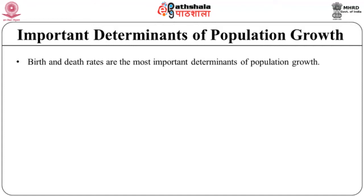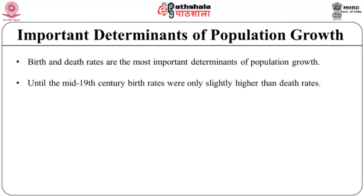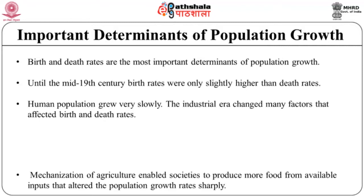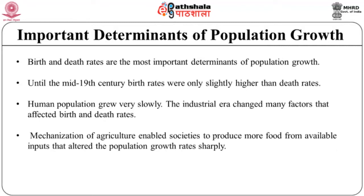Birth and death rates are the most important determinants of population growth. In some countries, net migration is also important. Until the mid-19th century, birth rates were only slightly higher than death rates, and the human population grew very slowly. The industrial era changed many factors that affected birth and death rates, leading to a dramatic expansion of the world's population. The mechanization of agriculture enabled societies to produce more food, which altered population growth rates sharply, and as food supplies expanded, vulnerability to chronic and contagious diseases declined.